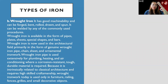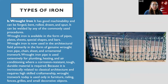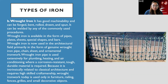Wrought iron is commonly seen in gates. It has good machinability and can be forged, bent, rolled, drawn, and spun, and can be welded by any commonly used procedure. It can also be used for furniture, railings, fences, grills, and small decorative objects.